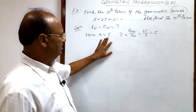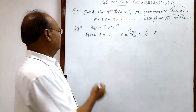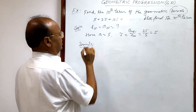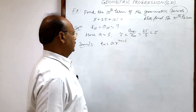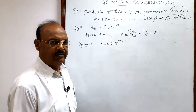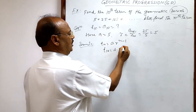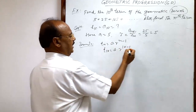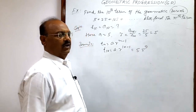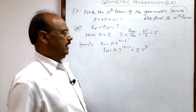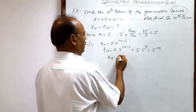Now that we have the values of a and r, we can find any desired term of this geometric progression very easily using the formula we discussed in the previous video: tn equals a times r to the power n minus 1. So t10 equals a times r to the power 10 minus 1. With a equal to 5 and r equal to 5, this gives us 5 times 5 to the power 9, which equals 5 to the power 10. Therefore, the 10th term is 5 to the power 10.